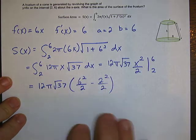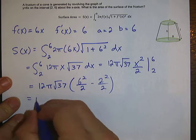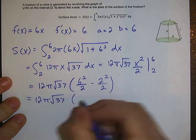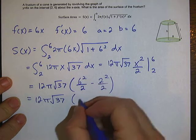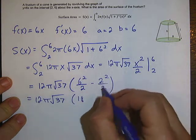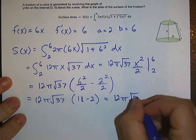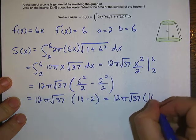So that will give us 12 pi square root of 37 and then we have 36 over 2 which is 18, 4 over 2 minus 2. So 12 pi square root of 37 times 16.